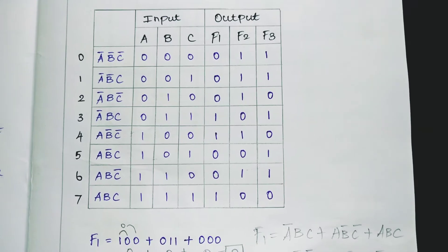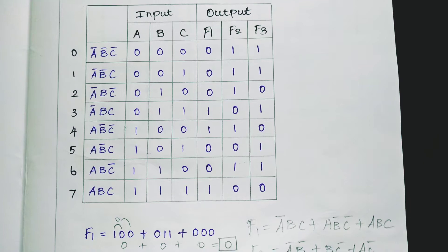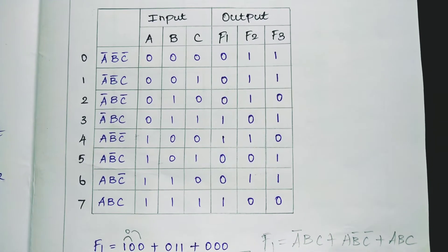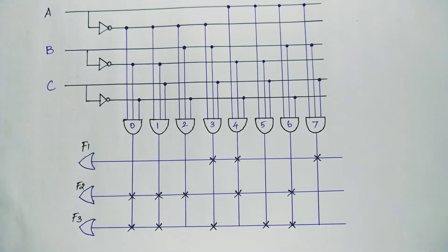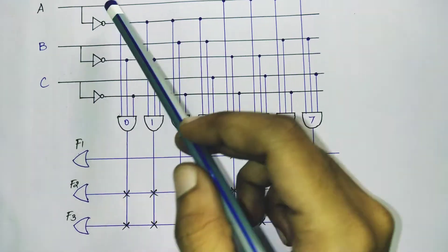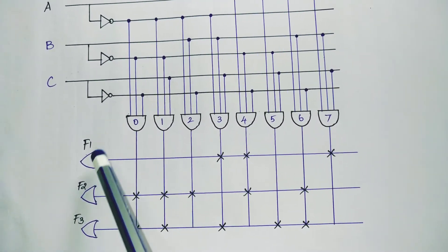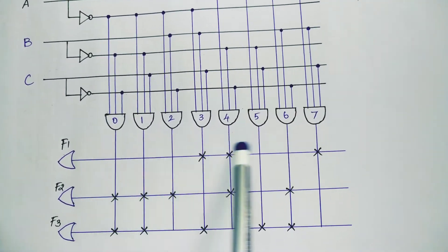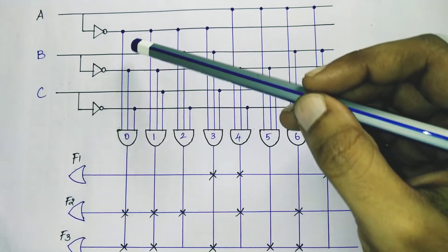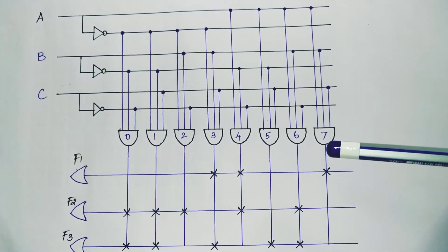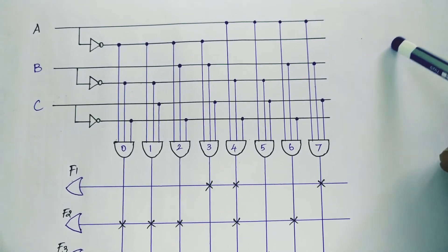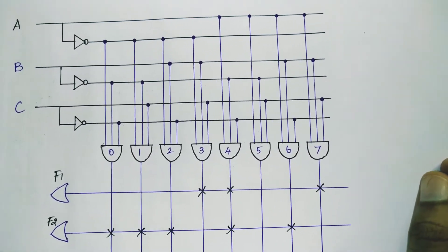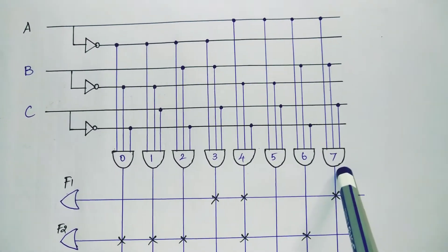After completing the table, draw the ROM structure using AND gates and OR gates. In ROM, the AND gate is fixed and the OR gate is fusible. Since there are 3 inputs A, B, C, put three lines for A, B, C each with their complements. There are three OR gate outputs. Since there are 8 binary values (0 to 7), put eight AND gates numbered 0 to 7.